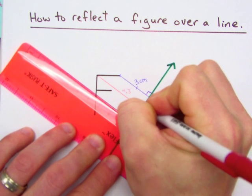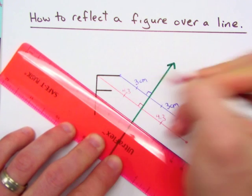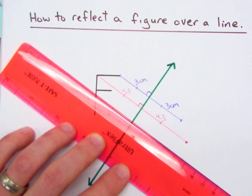And again, I have a perpendicular bisector. Okay, the line of reflection is a perpendicular bisector. So I know this other point has to be right there.